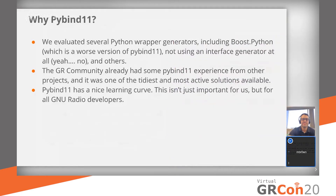Why did we choose PyBind? There's a bunch of tools that wrap C++ into Python. If you compare the available tools with the matrix of requirements we have, it drops down to a small number of useful wrappers. Another tool we looked at was BoostPython, but BoostPython is really just PyBind11 but much worse. Another thought was to not use an interface generator at all, since we only have Python 3 now — just write straight C — but that was too complicated. People from the community already had some PyBind11 experience, and as a project it seemed the best maintained and active. Finally, PyBind11 is easy to learn — truly easy if you know C++, unlike SWIG.